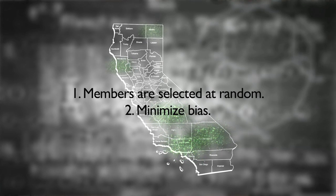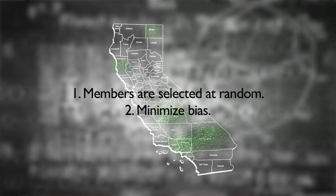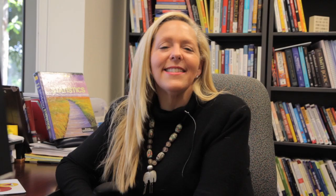When you do your statistical study, whether observational or experimental, make sure that members are selected at random and that you work hard to minimize any bias. Statistics is the collection, organization, and analysis of data. In this video, we talked about levels of measurement and methods of sampling. In future videos, we will talk about the organization and analysis of data.